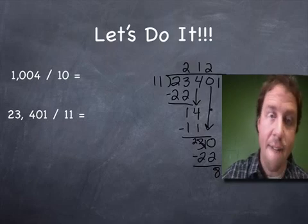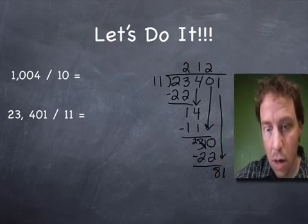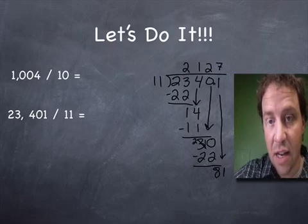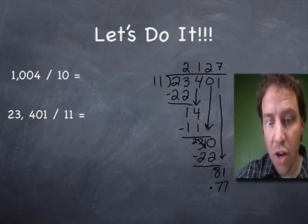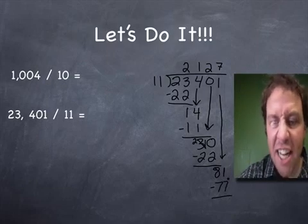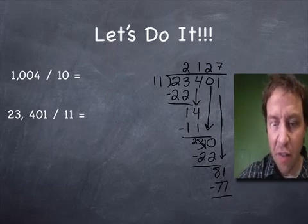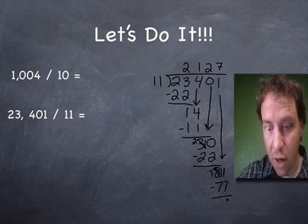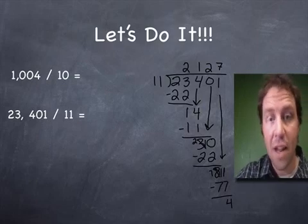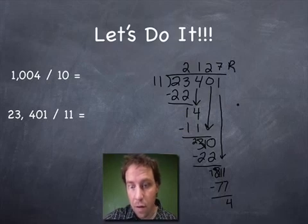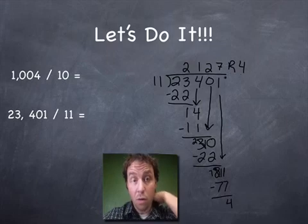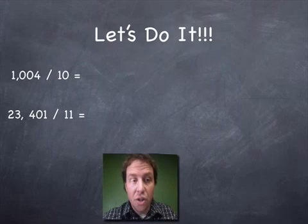3 becomes a 2, the zero becomes a 10. 10 take away 2 is 8, and then 2 take away 2 is zero. One more—slide and bring down our 1. 81, how many times is 11 going into 81? Only 7 times. What's 7 times 11? 77. Yeah, we're using our multiplication tables again and again and again. You didn't lie to us, Mr. C—we really do need to know this stuff. Let's borrow here because you can't take 7 away from 1, but you can take 7 away from 11. What do you get? 4. 7 minus 7 is zero, and we're out of numbers. So we have a remainder of 4. How many times is 11 going into 23,401? It goes in 2,127 times with a remainder of 4.